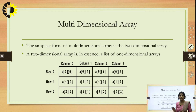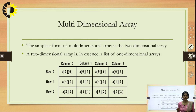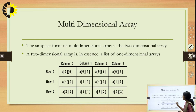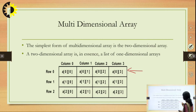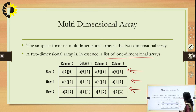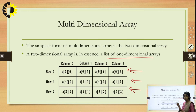We have discussed 1-dimensional array memory address calculation. Now moving on to multi-dimensional arrays. What are multi-dimensional arrays? The simplest form is the two-dimensional array. Any array with dimension two or more can be called a multi-dimensional array. A two-dimensional array is in essence a list of one-dimensional arrays — row 0, row 1, and row 2 are each one-dimensional arrays.